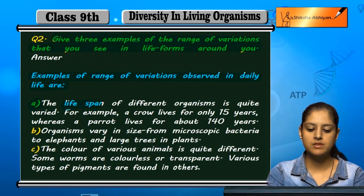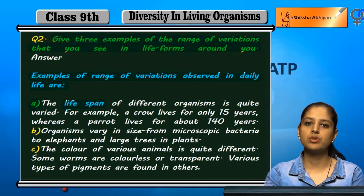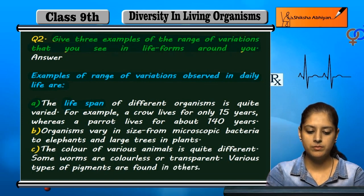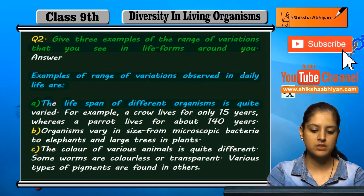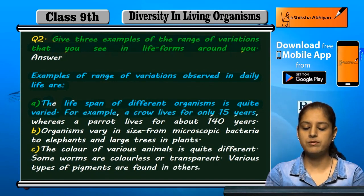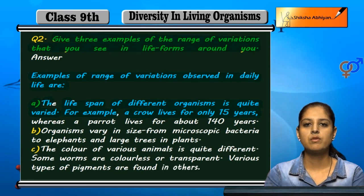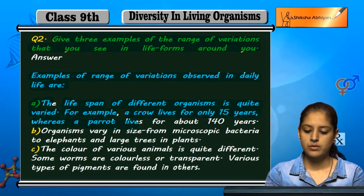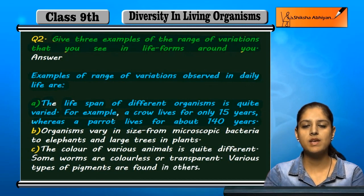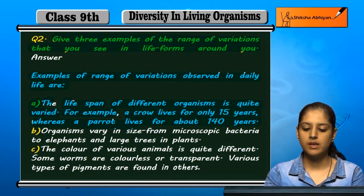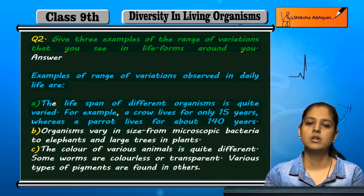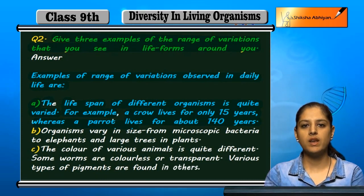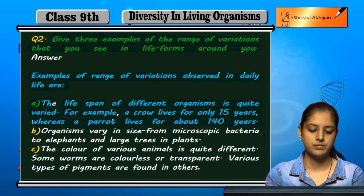One example is lifespan. We saw many organisms and some of them are small and some of them are more. The lifespan of different organisms is quite varied. For example, a crow lives for only 15 years. Crows and parrots are both birds, but in birds you also see variety and variation. The parrot's lifespan is about 140 years. So this is one example of the variation in lifeforms.